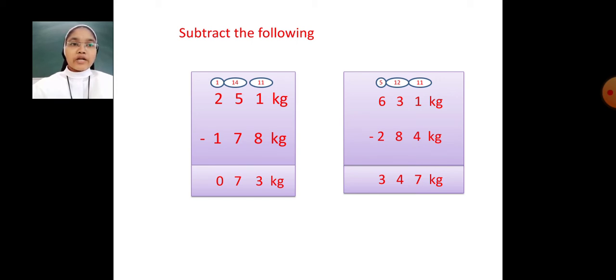Now in the hundreds place, remaining 5. 5 minus 2 is 3. 631 kilogram minus 284 kilogram, your answer will be 347 kilogram.